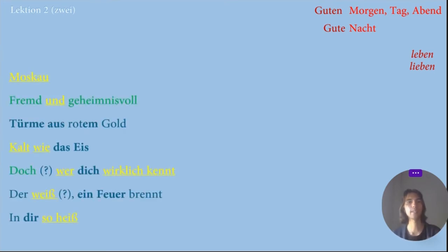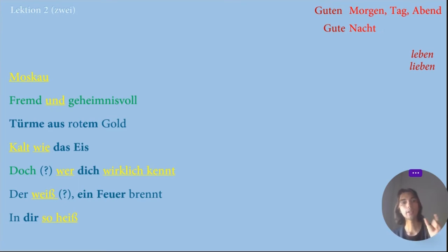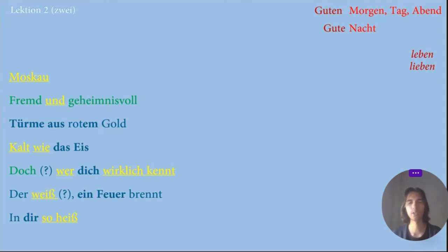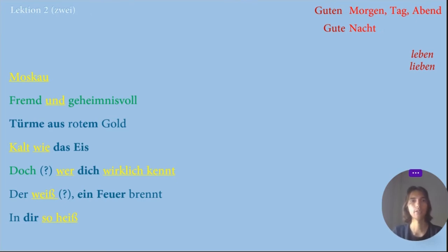The yellow — these are words that I've already discussed with you. Green — these are words that I didn't really understand. Why? What are they used for? Let's start. First of all I've analyzed nouns like Türme, Das Eis, and Ein Feuer.